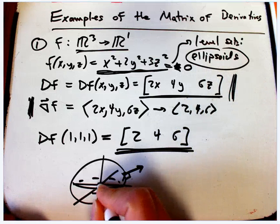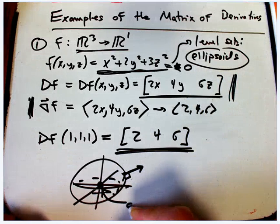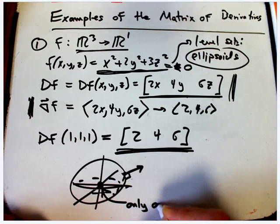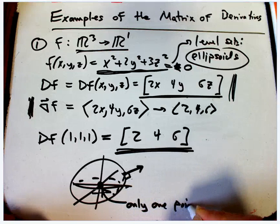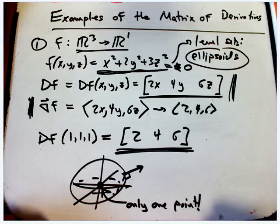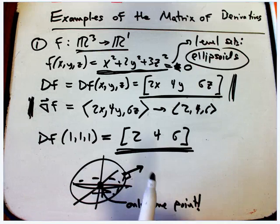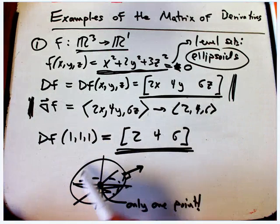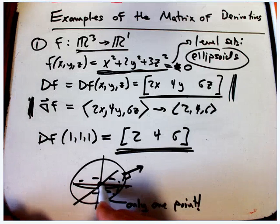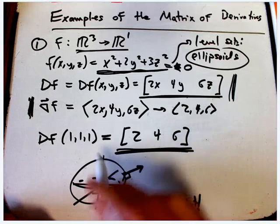That's pretty atypical. Usually when you have one equation and three variables, you expect a surface. You expect something that still has two dimensions you can go in the level set, and this is very degenerate. And what is the derivative there?